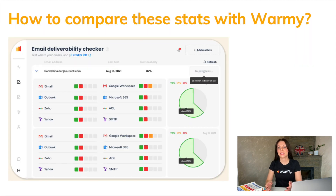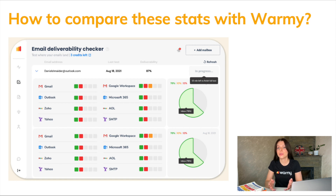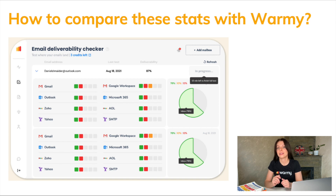How to compare the stats with Wormy? In order to compare the statistics obtained in Microsoft SNDS, it is best to use the deliverability checker. It will allow you to track whether emails are in the spam folder for Microsoft accounts at the moment. Try this by clicking the link in resources.